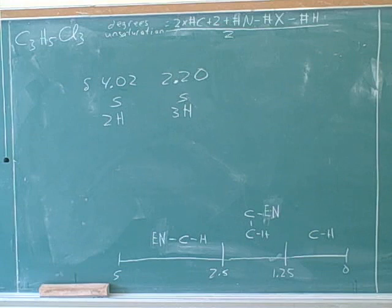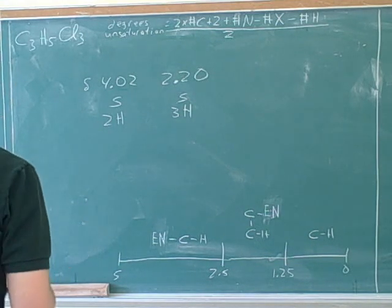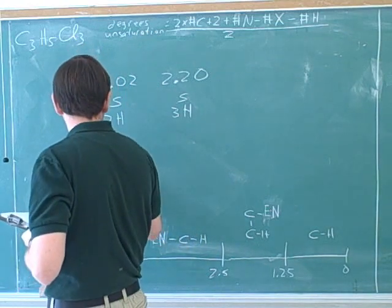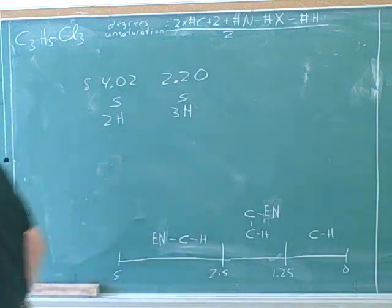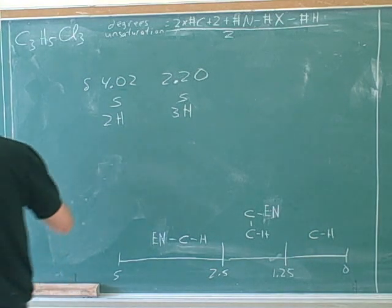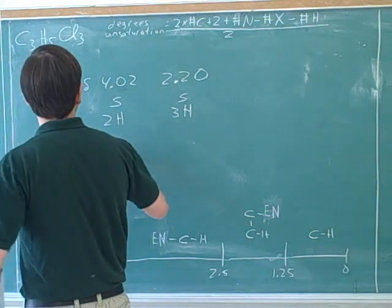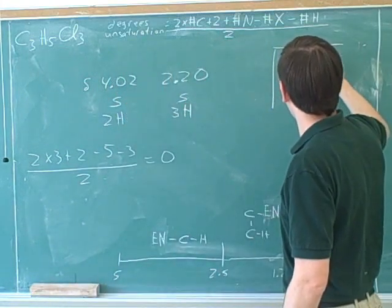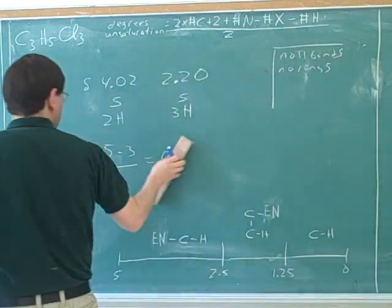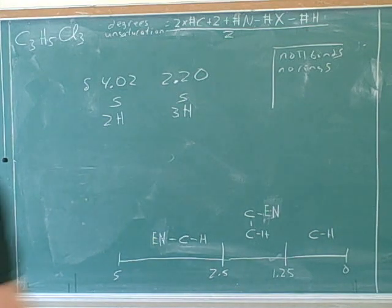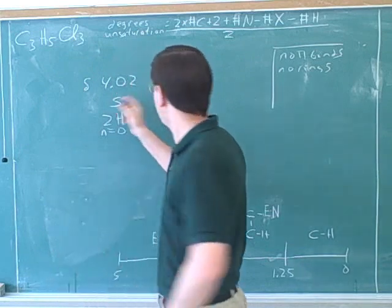I know that they have to be attached to a carbon that has no hydrogens, but I don't know how to get that. That's three plus two minus five minus three over two — six, eight — that's zero. What does that tell us? You worked out that n is zero for both of these. That's good. That's good. From the fact that they're both singlets. Very good.